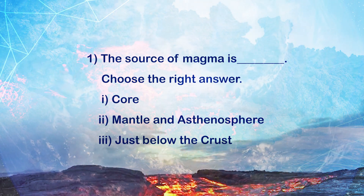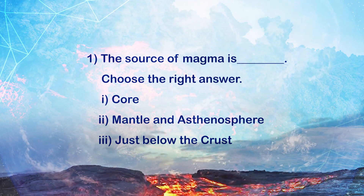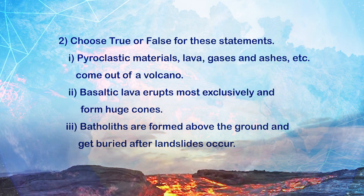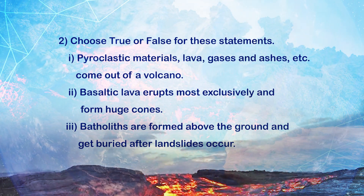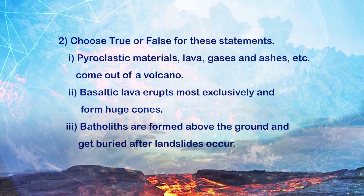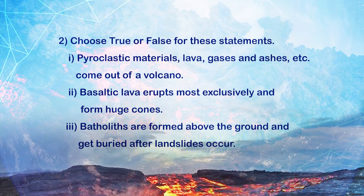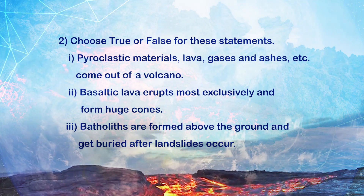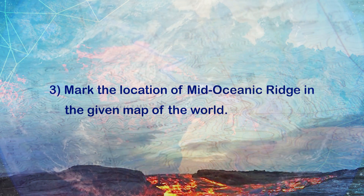Now let us go through a few questions to make sure you have understood the concept well. First: the source of magma is — choose from coal, mantle and asthenosphere, or just below the crust. Second: choose true or false — pyroclastic materials, lava, gases and ashes come out of a volcano; basaltic lava erupts most explosively and forms huge cones; batholiths are formed above the ground and get buried after landslides occur. Third: mark the location of mid-oceanic ridge in the given map of the world.